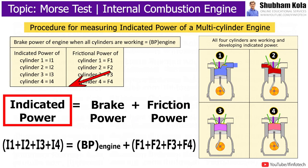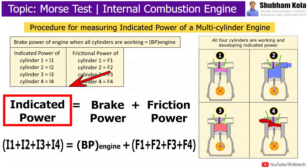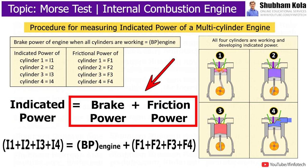The indicated power is the power produced due to combustion of fuel within the engine cylinder. It is the sum of frictional power and brake power.